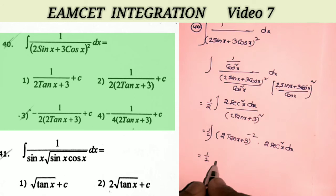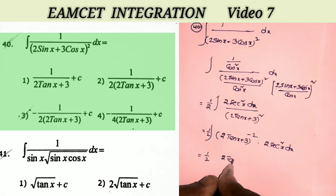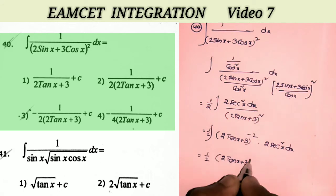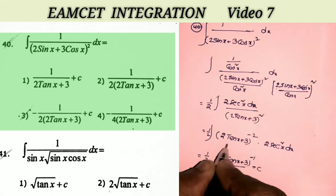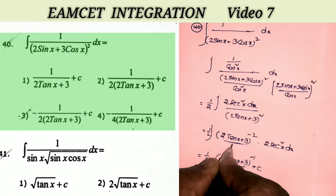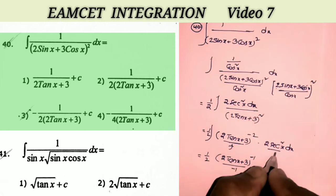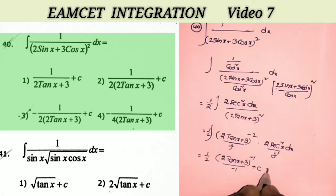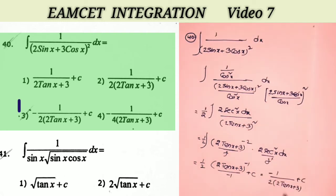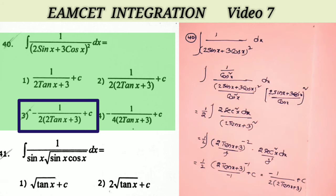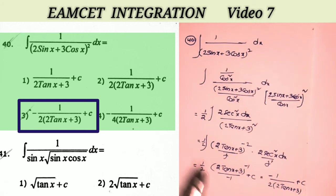What is the integration of f(x)^n · f'(x)? It is f(x)^(n+1) / (n+1). So the answer is (2 tan x + 3)^(−1) / (−1) + c, which equals −1 / (2(2 tan x + 3)) + c. That's all. And this is the third option.